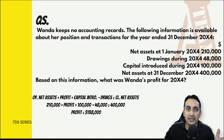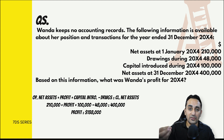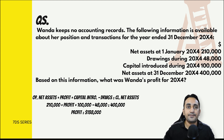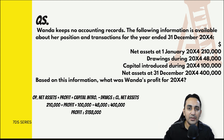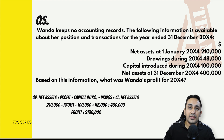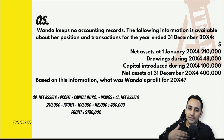Opening capital दे रखी है, drawings कितनी हैं बता रखा है, capital introduced कितनी है वो भी बता रखा है, और closing net assets कितना है। Capital में profit की वज़ह से capital बढ़ेगी और loss की वज़ह से घटेगी - यही missing item है। Opening capital से शुरू करेंगे, profit add करेंगे (जो हमें पता नहीं), capital introduced add करेंगे, drawings 48,000 minus करेंगे, और closing net assets 400,000 आना चाहिए। सारे figures दूसरी तरफ ले जाने पर profit हमारा 138,000 निकलेगा।